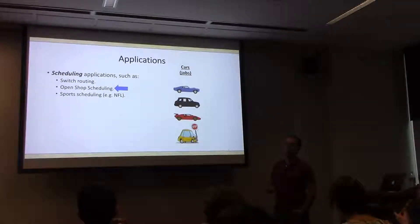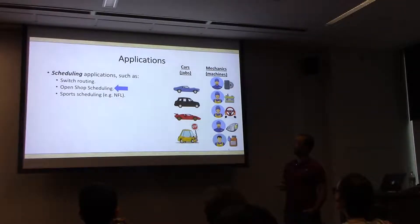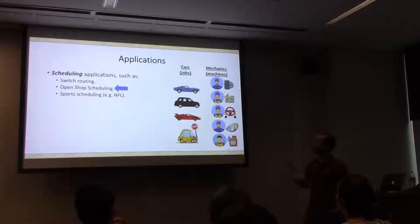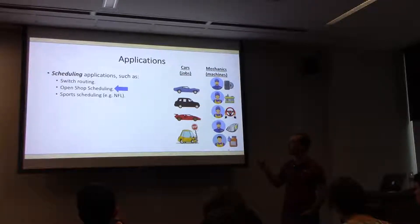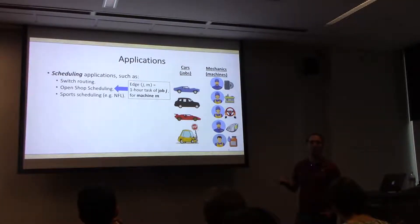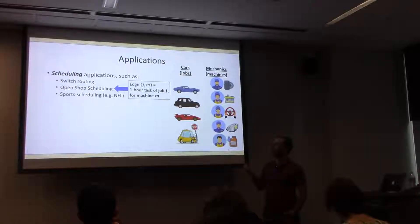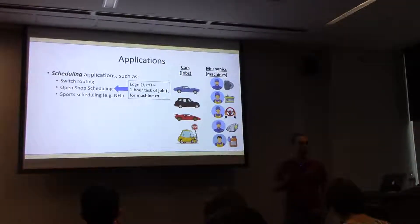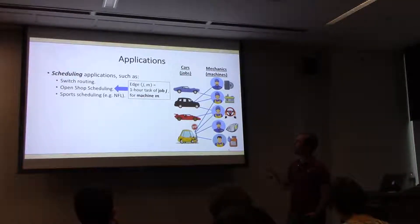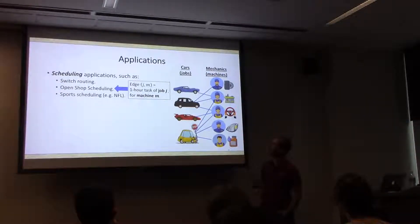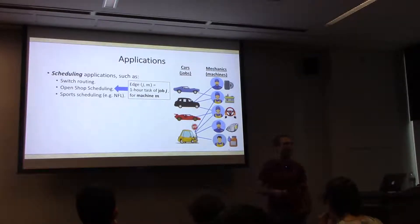In open shop scheduling, we have jobs — in this case cars — and machines, in this case mechanics, each with different specializations. The first mechanic knows how to replace tires, the second replaces batteries, the third fixes wheels, and so on. This bipartite graph will have an edge between job j and machine m if there's a one-hour task that job j requires machine m to do. Every car can only be serviced by one machine at a time, and any machine can only service one car per time.